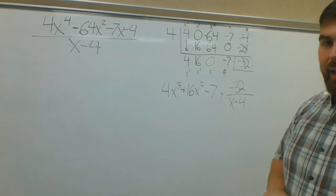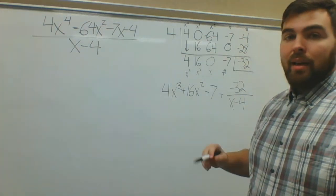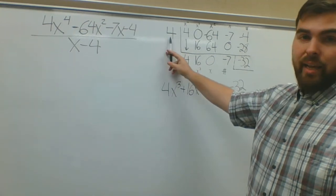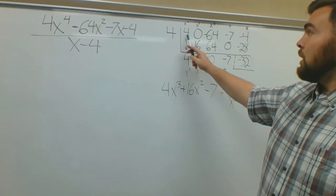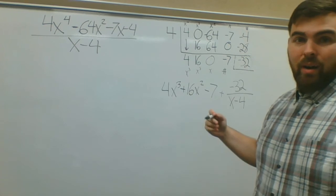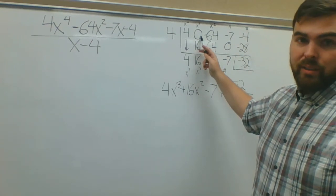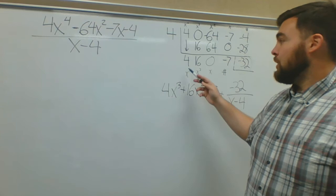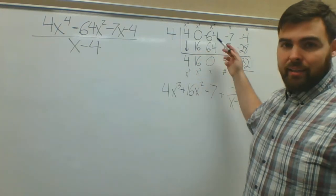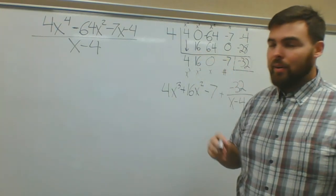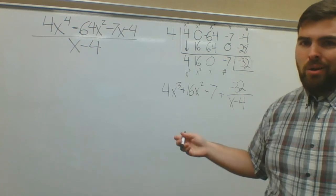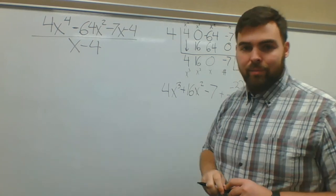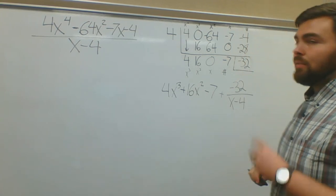That will be your answer. A couple things to make sure you're doing: make sure you change the sign here, make sure your coefficients are all right and you don't miss like an x to the third zero here, and then make sure that you're adding and multiplying correctly. It's very easy to make a small mistake. You guys are all allowed calculators, so use them. This was 5.4.